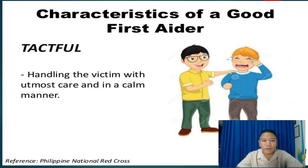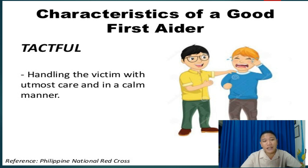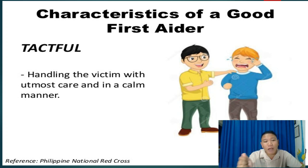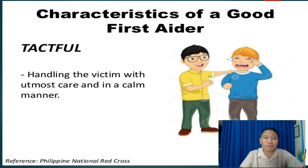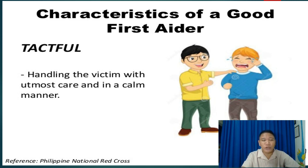Next is being tactful. The first aider should not alarm the victim or patient. For example, if the patient's foot or hand has been amputated, do not pick it up and show it to them. Do not let them see the injured part. In first aid, do not let them see the injured part — it may cause serious complications. The patient may become agitated, start screaming, and their blood pressure and heart rate may rise, causing increased bleeding that may lead to death.